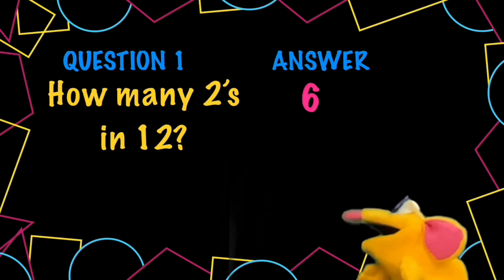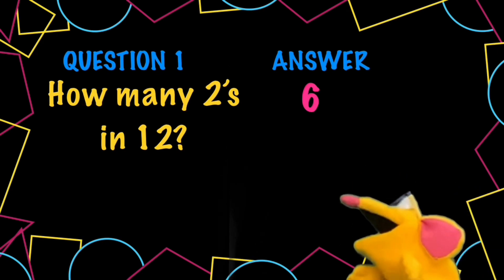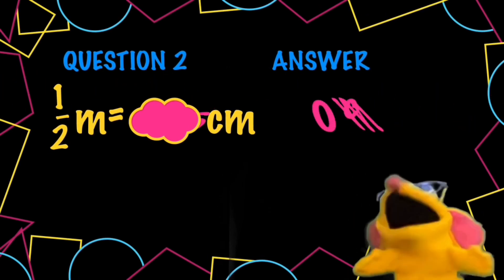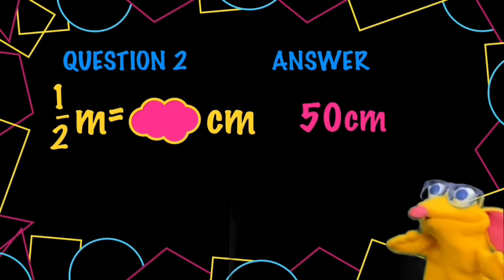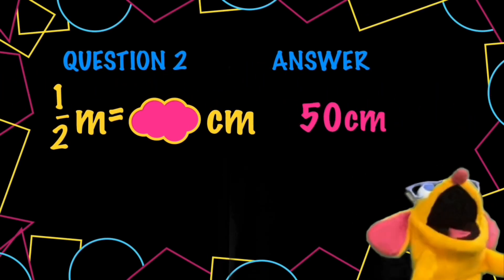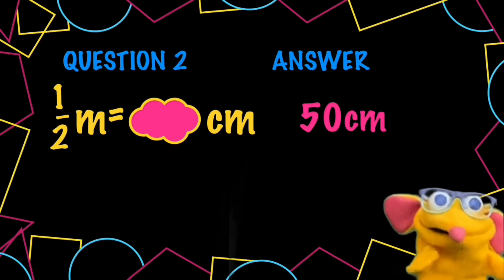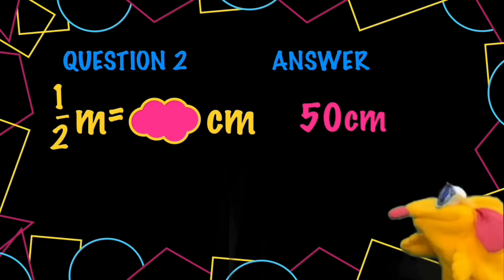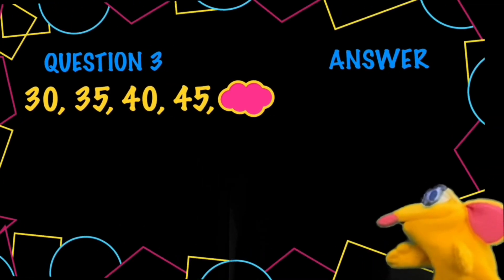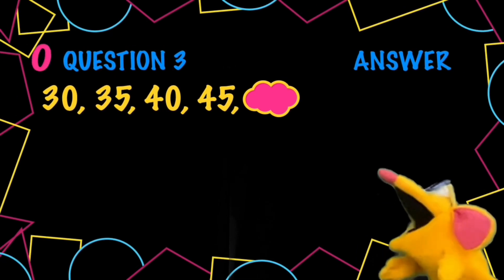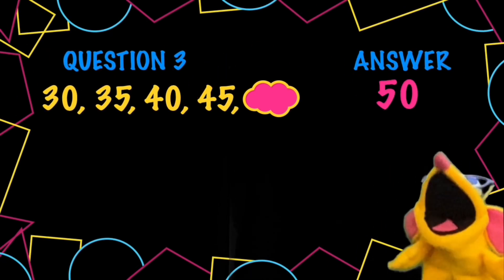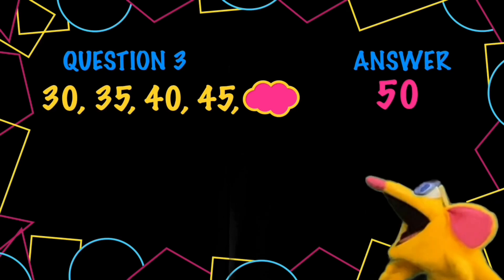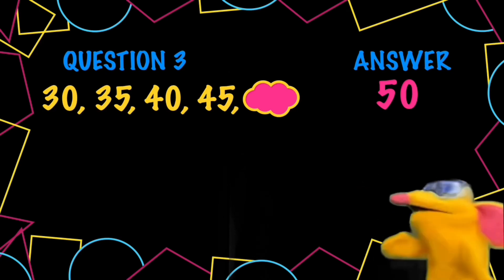Next question. Here comes question 2: Half a metre equals how many centimetres? 50. Because 1 metre is 100 centimetres, so half of that is 50 centimetres. In this sequence, the next number is 50. We're counting up in multiples of 5. You can see they end in a 0, then a 5.